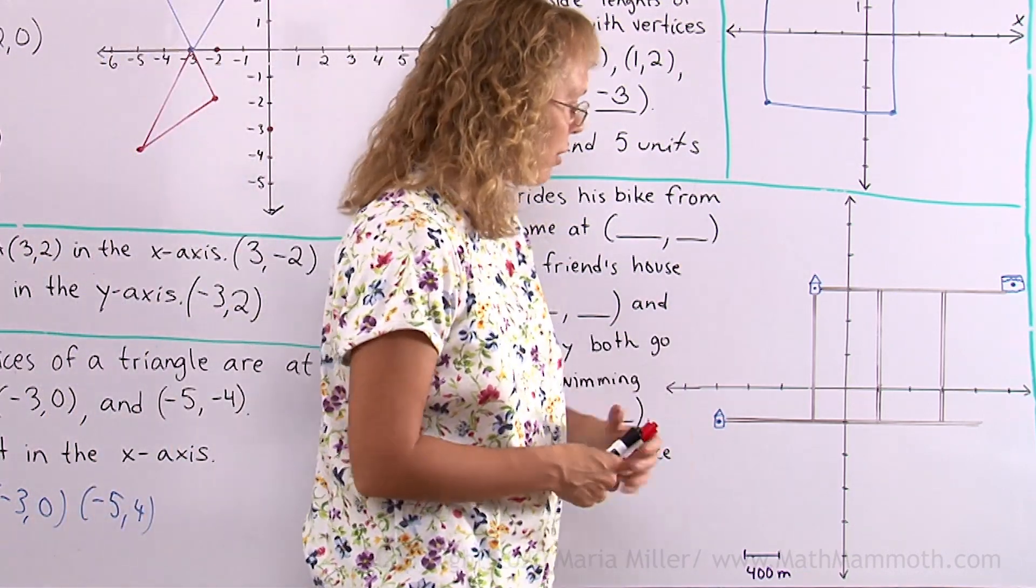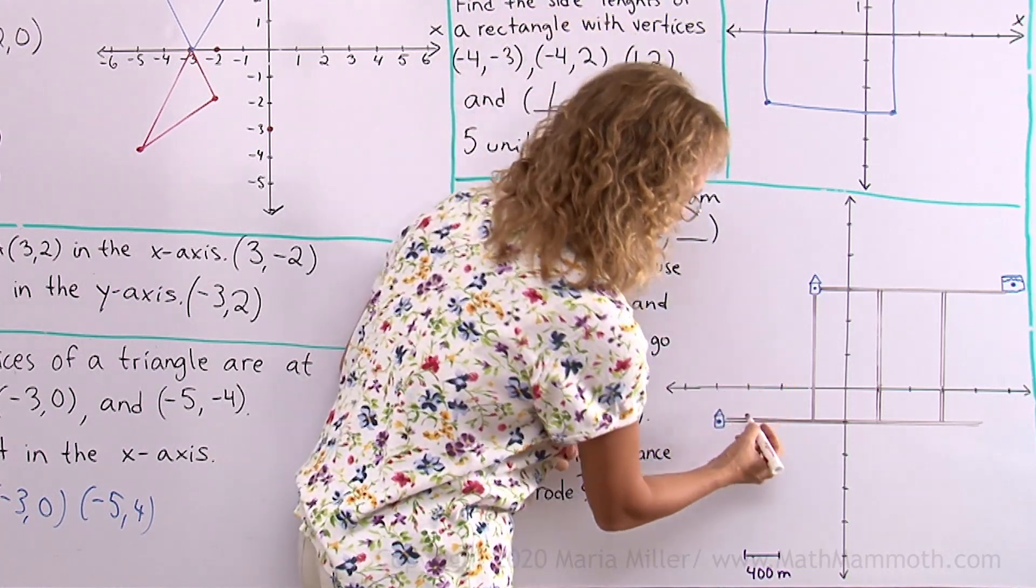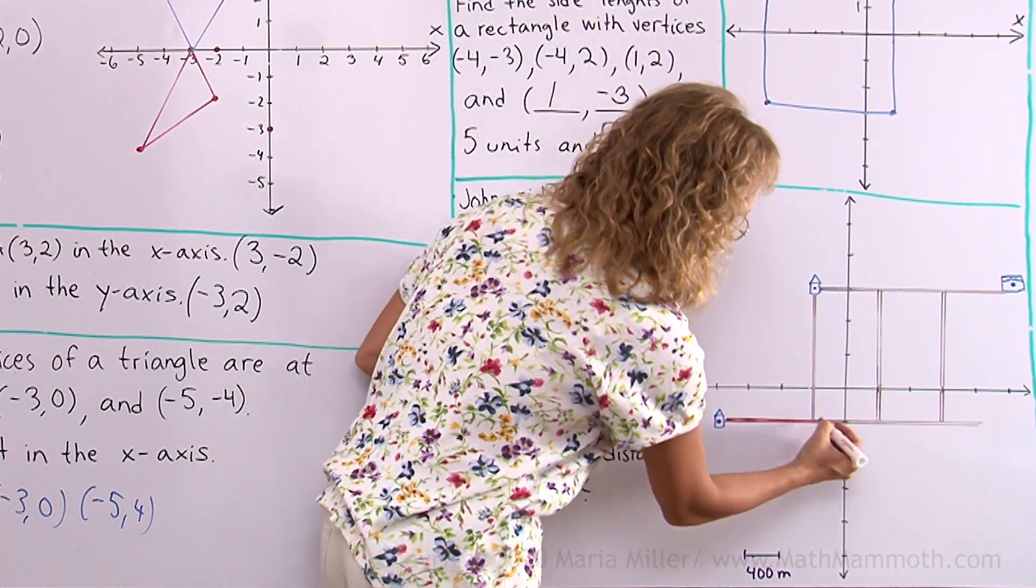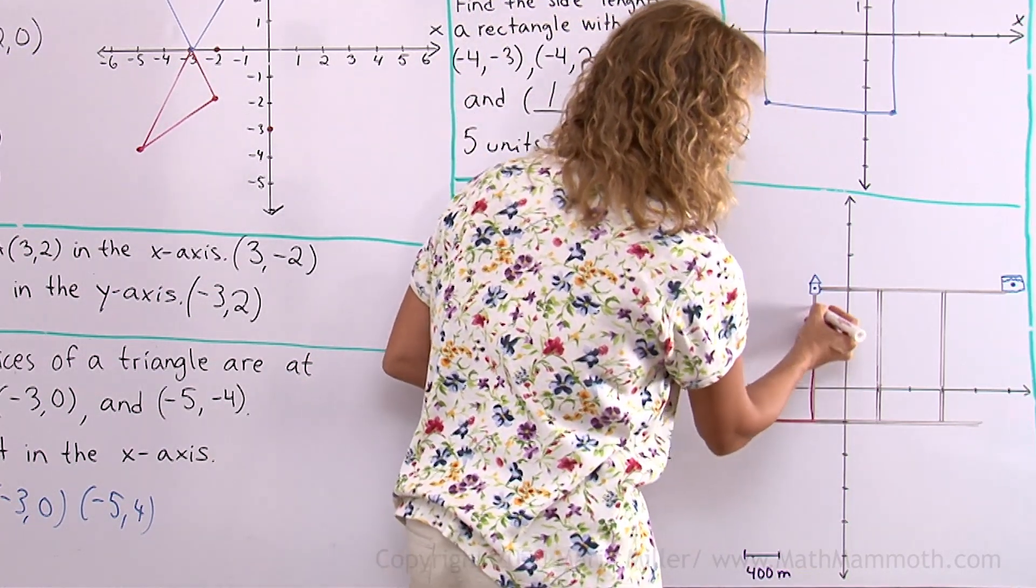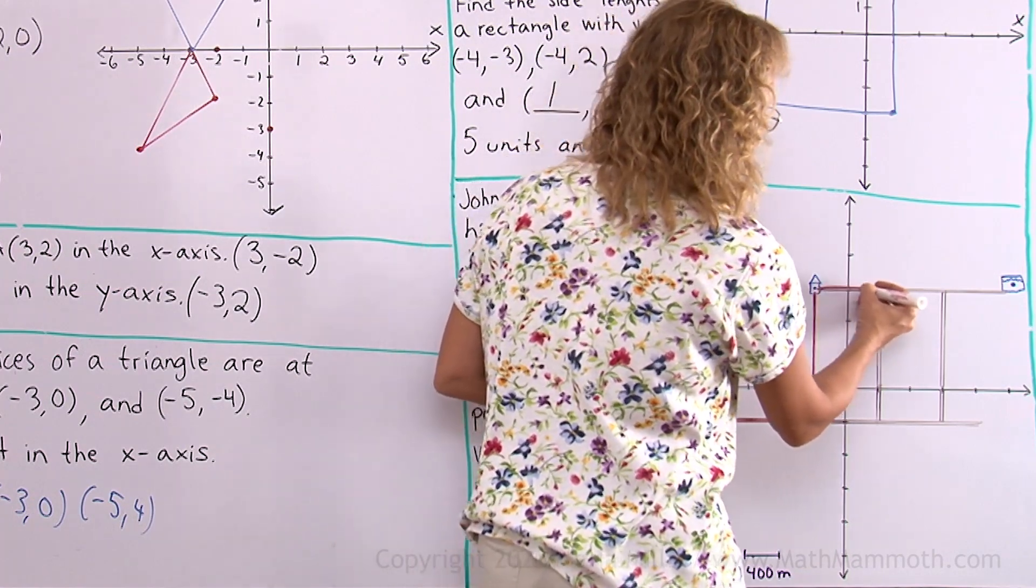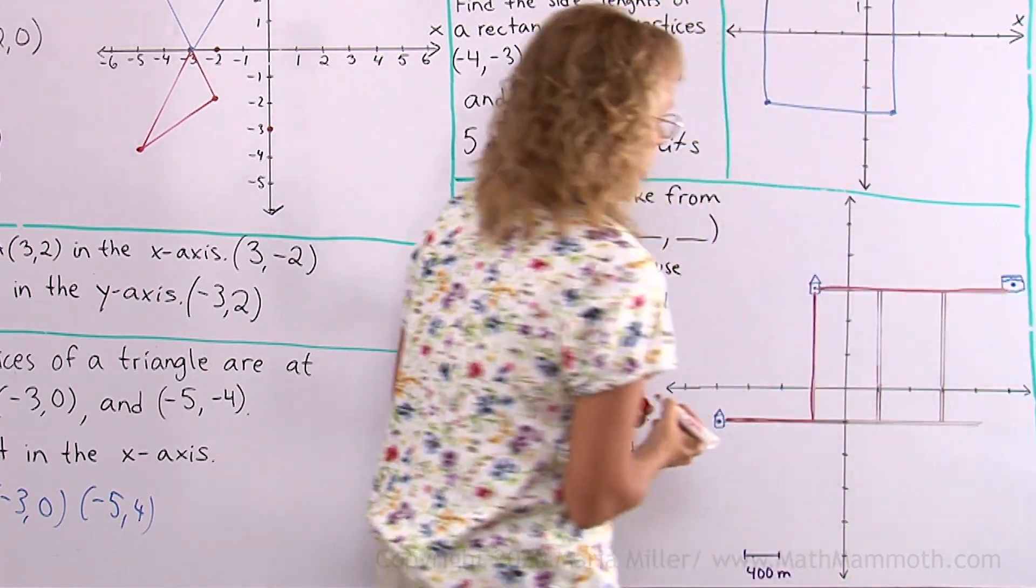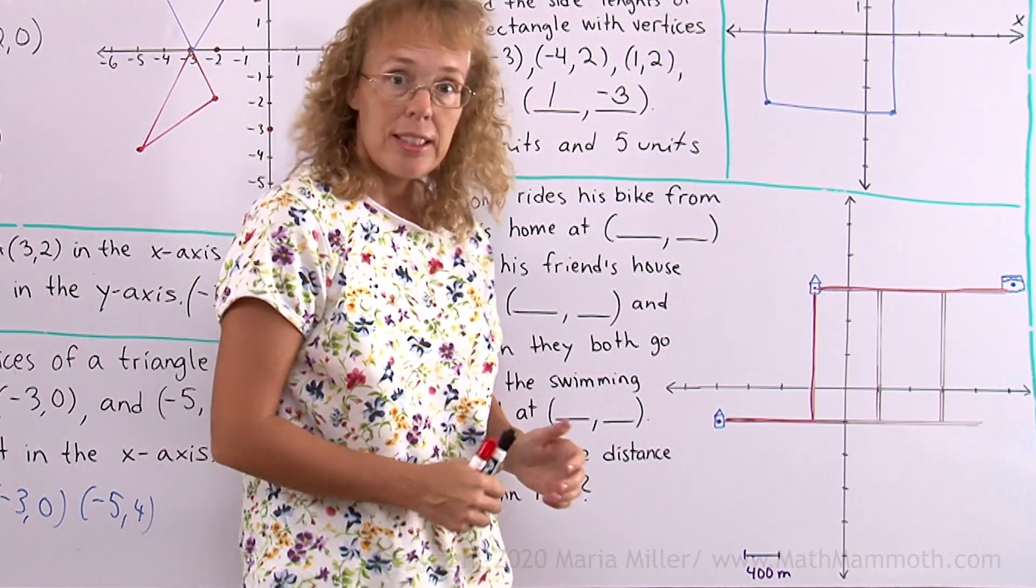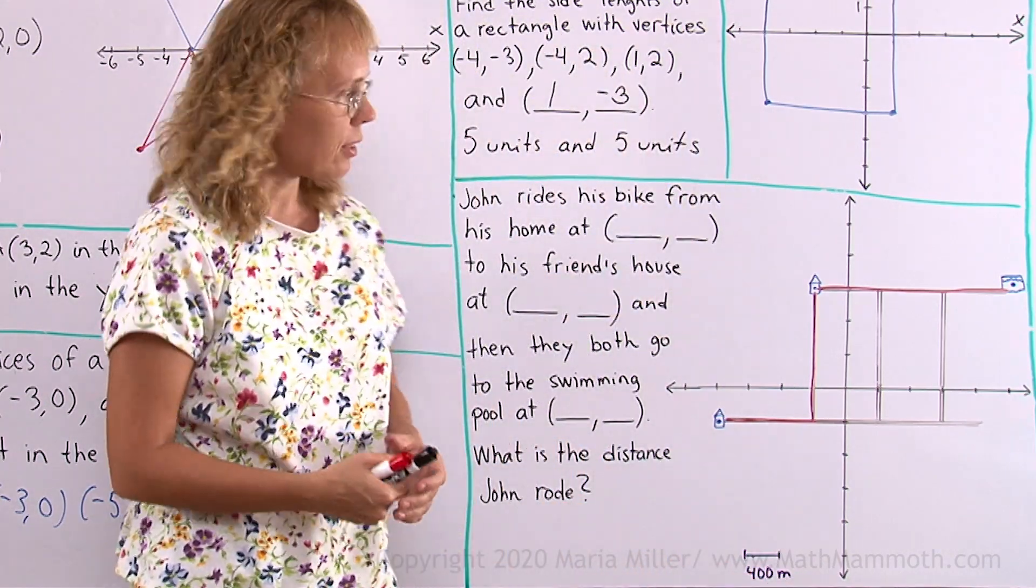So I drew here a map about it. This is John's home here. So he rides here. Then he goes up to the friend's house and then they ride together over there.